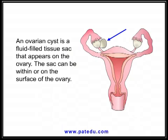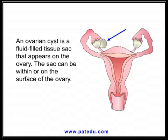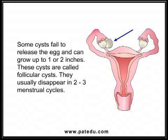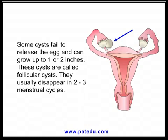An ovarian cyst is a fluid-filled tissue sac that appears on the ovary. The sac can be within or on the surface of the ovary. Some cysts fail to release the egg and can grow up to one or two inches; these are called follicular cysts, and they usually disappear in two to three menstrual cycles.